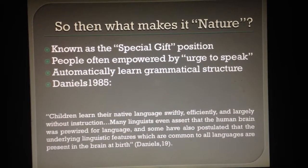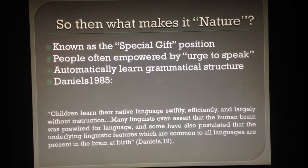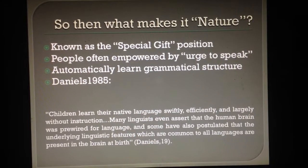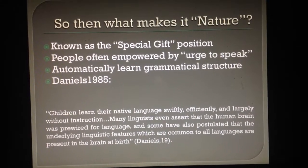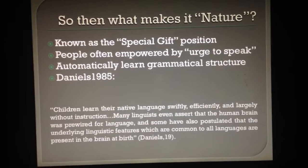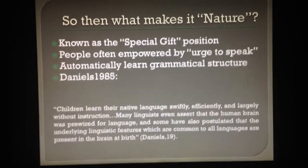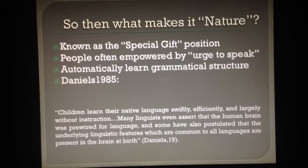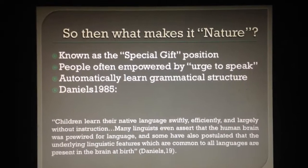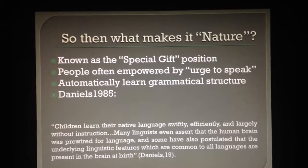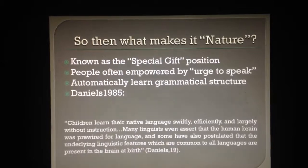Additionally, in our Daniels 1985 reading titled Nine Ideas About Language, Daniels himself acknowledges in his very first point that children learn their native language swiftly, efficiently, and largely without instruction. He continues on to say that many linguists even assert that the human brain was pre-wired for language, and some have also postulated that the underlying linguistic features, which are common to all languages, are present in the brain at birth. It makes it quite difficult to deny nature's clear appearance when it comes to language acquisition.